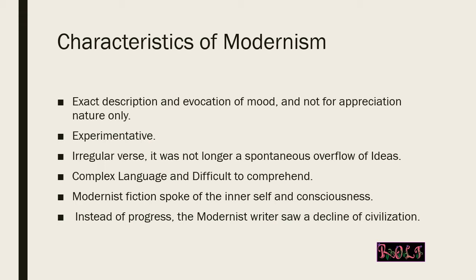Modernist literature was experimenting with new subjects for poetry. It was not linear — there was no clear beginning, middle, and end. It had irregular verse, and especially the stream of consciousness technique as we see in James Joyce's and Virginia Woolf's novels, wherein the character keeps going back and forth in time.